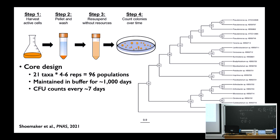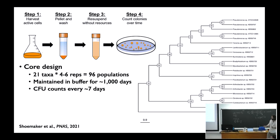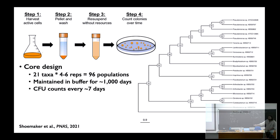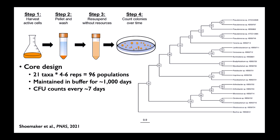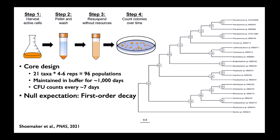The experiment itself is a fairly simple but labor-intensive design: you grow your bug in rich media to a high cellular density, pellet and rinse in buffer in triplicate, then re-suspend in buffer without resources. You have a high density of cells in a closed system with no exogenous resources — all heterotrophic bacteria. The core design uses 21 phylogenetically diverse taxa across four phyla, all soil isolates from Jay's time at Kellogg Biological Station in Michigan, maintained in buffer for 1000 days with plating roughly every seven days.